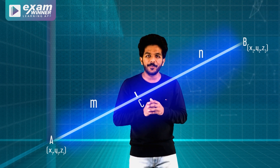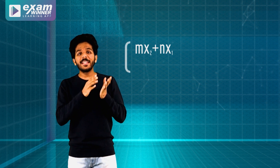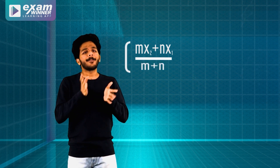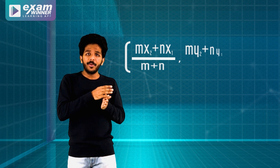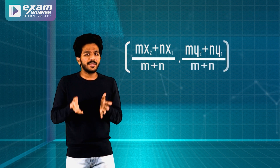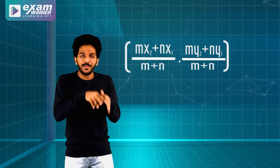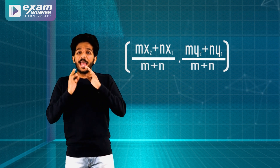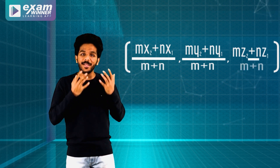Now let's apply the section formula. The formula for internal division is: x-coordinate of C = (m·x₂ + n·x₁) / (m + n), y-coordinate of C = (m·y₂ + n·y₁) / (m + n). Now for the Z-coordinate, we apply the same formula: z-coordinate of C = (m·z₂ + n·z₁) / (m + n).